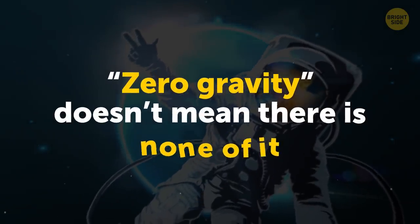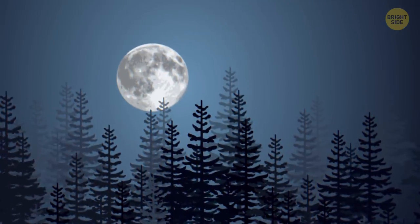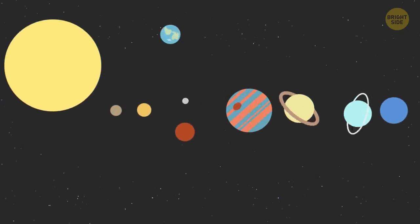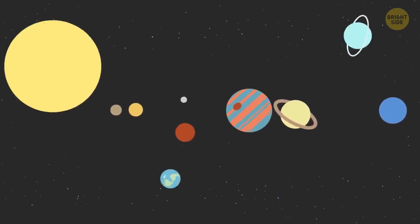Zero gravity doesn't mean there is none of it. If there was no gravity in space, the Earth wouldn't be able to hold the Moon near itself. All the planets and stars would just fly across the universe freely, bump into each other.